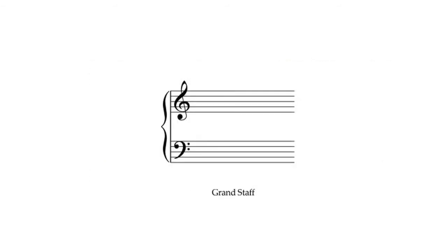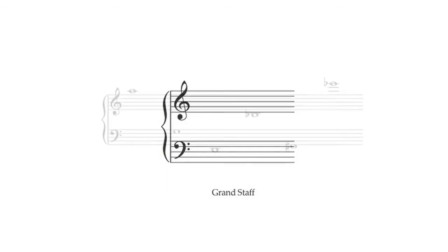Staves can be combined to show a broader range of pitches. This is most commonly done by placing two staves, one treble and one bass, together to form what musicians call a grand staff. The bracket at the left of the two staves that connects them shows that these two staves are to be read simultaneously. There can be some overlap on the grand staff, as the same pitch can be indicated on either staff. When reading, first check the clef.